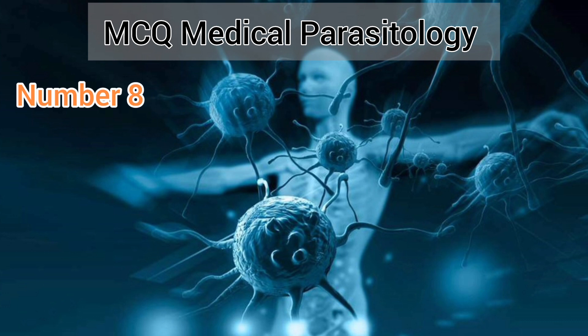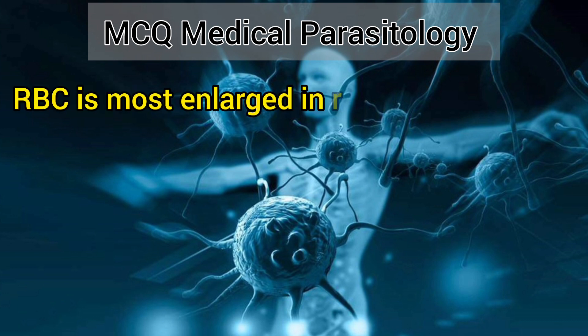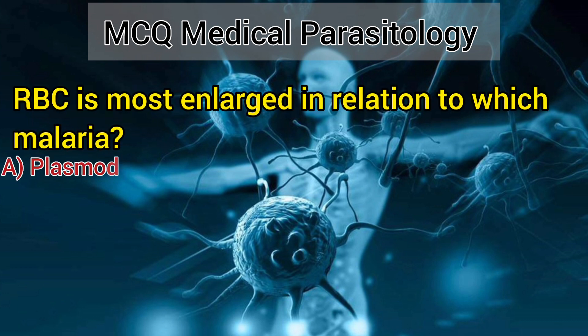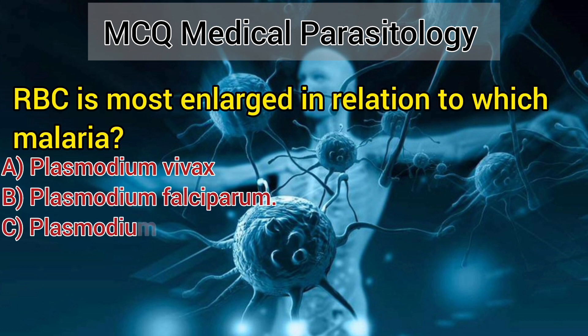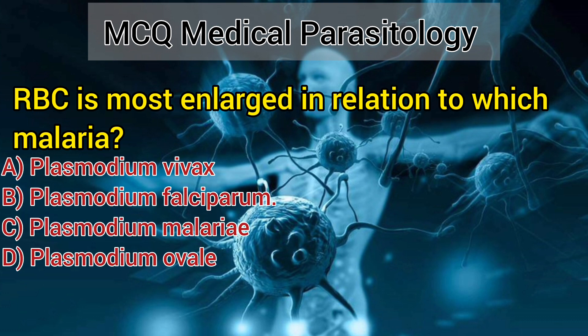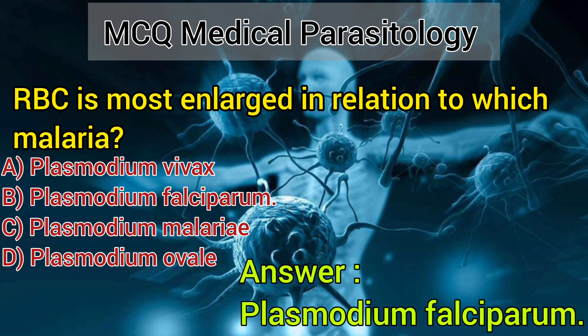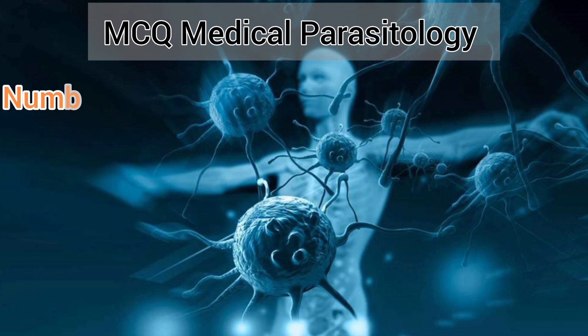Number 8. RBC is most enlarged in relation to which malaria? A. Plasmodium vivax. B. Plasmodium falciparum. C. Plasmodium malariae. D. Plasmodium ovale. Answer: Plasmodium falciparum.